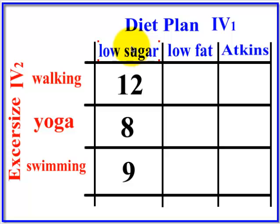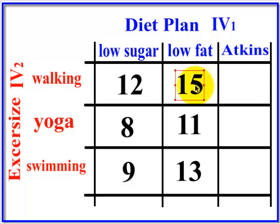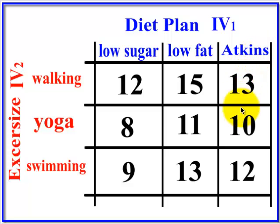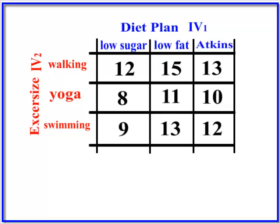I'm just going to make up numbers. Here's the low-sugar group with their walking, yoga, and swimming. Here's the low-fat group with their walking, yoga, and swimming. And there's the Atkins group. So there's the pretend data.